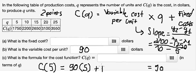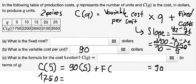And we want to find the fixed cost. C(5) equals 1750. 90 times 5, we have 450.